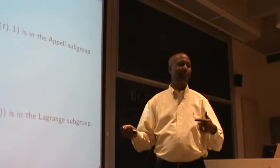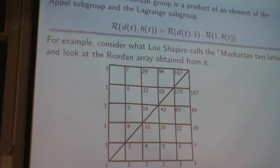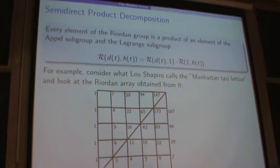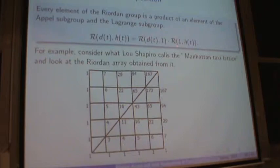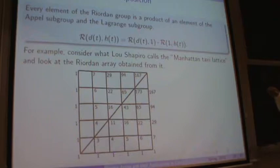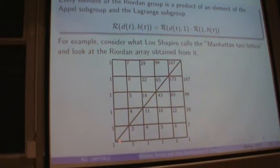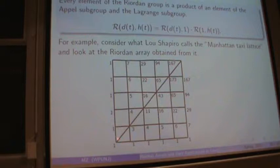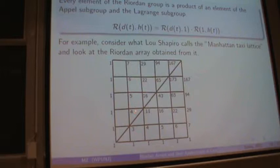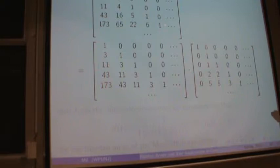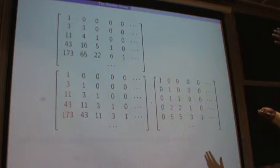Very quickly, a semi-direct product decomposition of elements of the Riordan array: you can describe any element as a product of the Appell and Lagrangian subgroups. Consider the so-called Manhattan taxicab lattice paths — what Lou Shapiro calls them — going from (0,0) to (N,N) with north, east, and diagonal steps allowed. There are 11 ways to go from (0,0) to (2,2). This is the Riordan array corresponding to the Manhattan taxicab paths, obtained by taking either the upper or lower half.